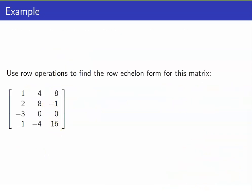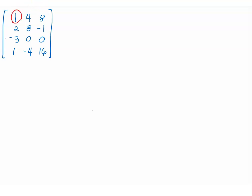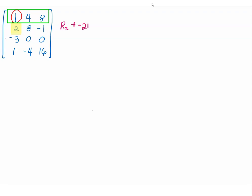Let us have another example. Use row operations to find the row echelon form for this matrix. For the first row, the leading entry is already equal to 1, so no scaling is needed. What we want to do is make all the entries below it equal to 0, and I will be doing that in one single step. In order to turn R2 to 0, we add it with a scalar multiple of row 1 — because this is the row corresponding to the leading entry we are looking at. So R2 plus negative 2R1 will be our new R2. And for R3, this is negative 3, so we add 3 times R1 — that would be our new R3.